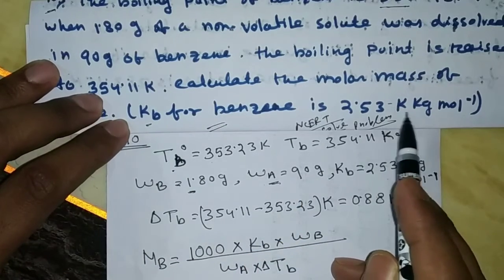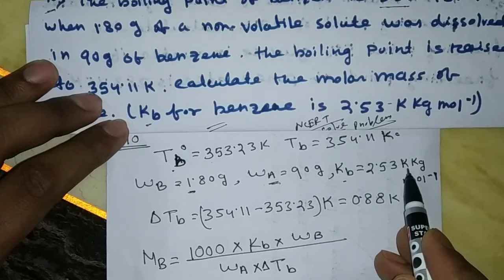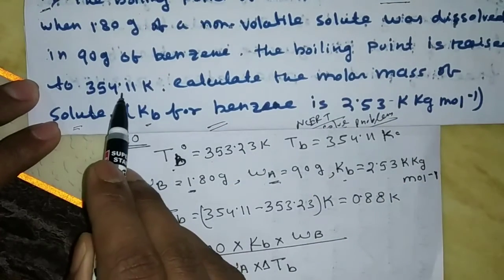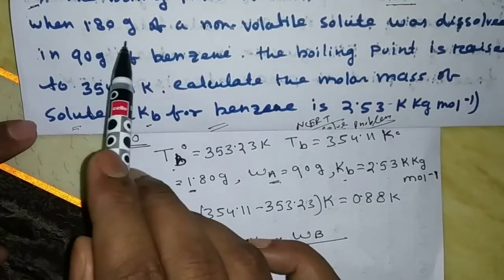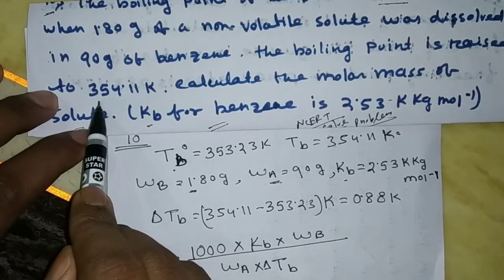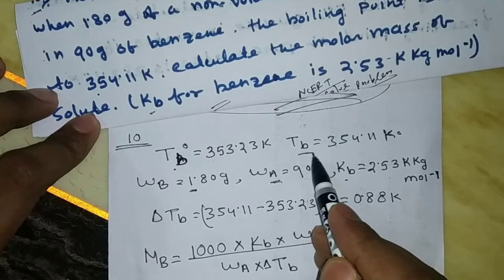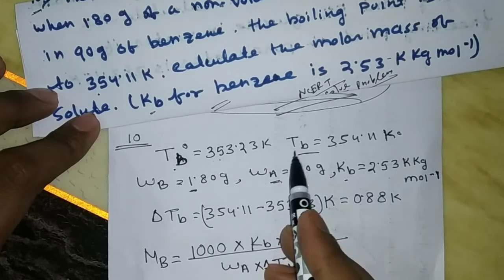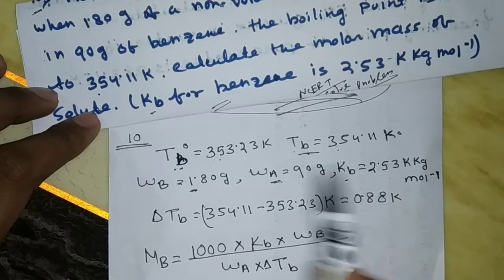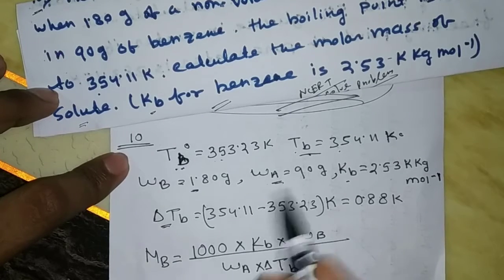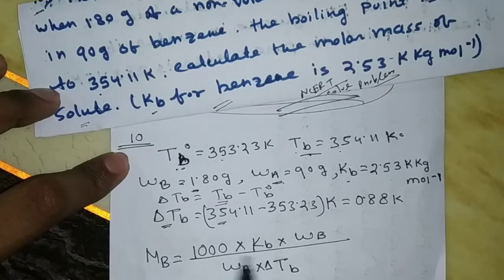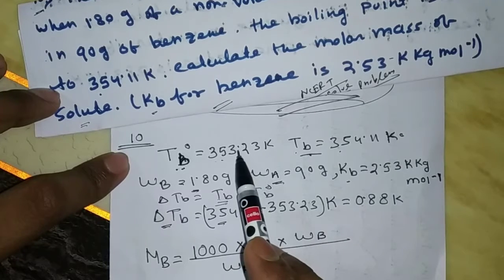Kb for benzene is 2.53 Kelvin·kg·mol⁻¹. The boiling point of the solution, Tb, is 354.11 Kelvin. ΔTb = Tb − Tb-not = 354.11 − 353.23 Kelvin. So ΔTb is equal to 0.88 Kelvin.